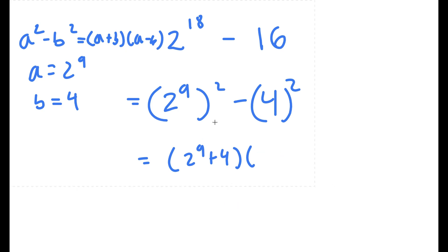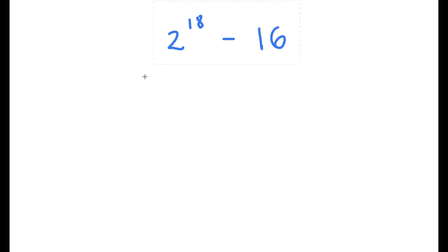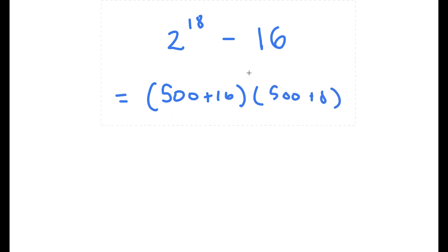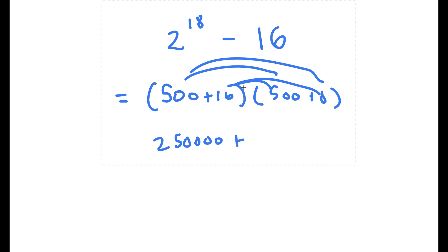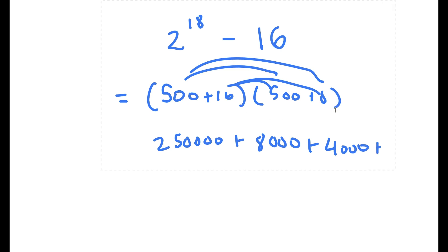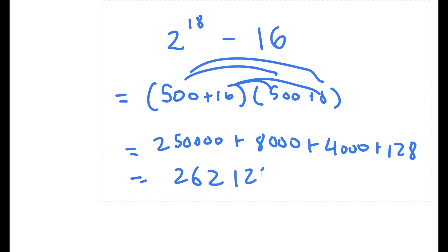To multiply 516 times 508, I rewrite 516 as 500 plus 16 and 508 as 500 plus 8, then distribute. 500 times 500 is 250,000. 16 times 500 is 8,000. 500 times 8 is 4,000. And 16 times 8 is 128. Adding the partial products: 8,000 plus 4,000 is 12,000; 12,000 plus 128 is 12,128; and 250,000 plus 12,128 is 262,128. So this is my answer.